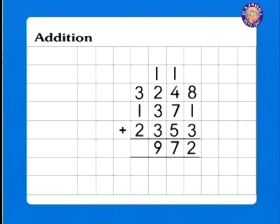Last, but not the least. Add the left-most line of numbers. That's 3, 1, and 2 to get 6. Ho, ho, ho! And what do we have here? Why, it's the answer to 3,248 plus 1,371 plus 2,353. And the correct total is... Hold your breath!